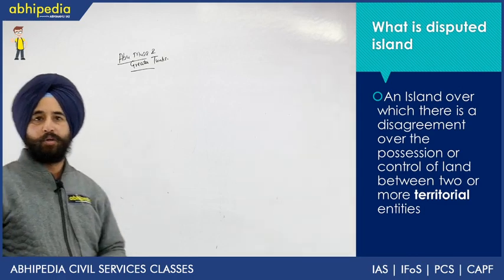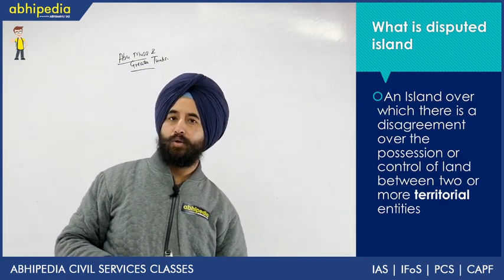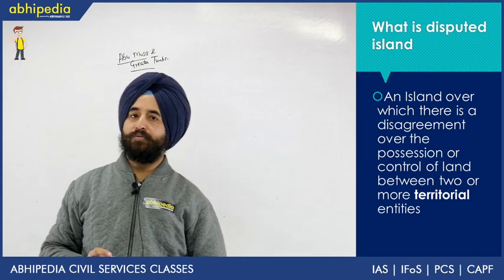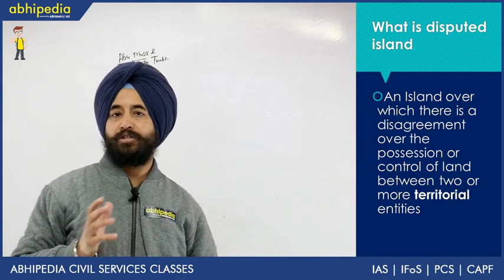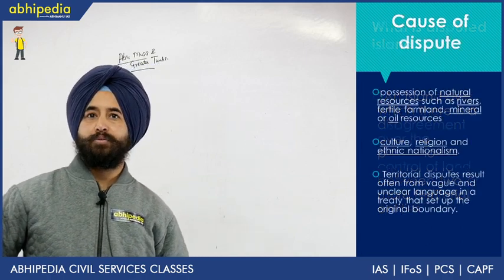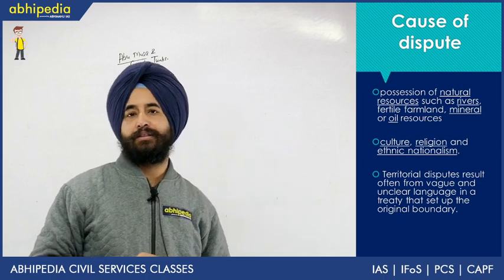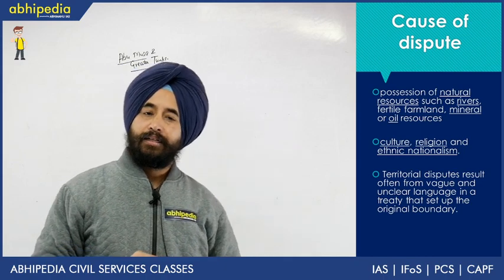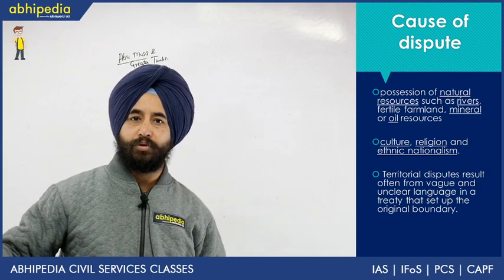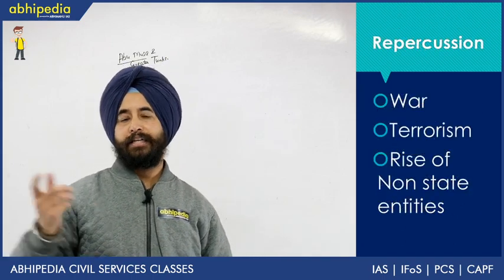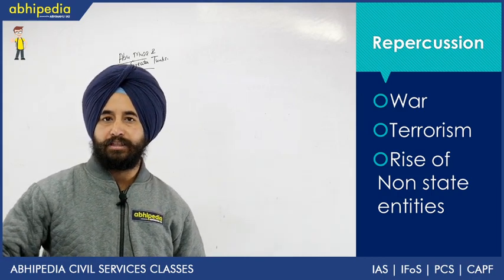Just to recap: a disputed island is that part of land over which there is a dispute between two or more countries or entities over the possession of that land. There are many causes of dispute, such as natural resources, rivers, cultural or religious reasons, or vague agreements. These disputes can lead to war, terrorism, and the rise of non-state entities.